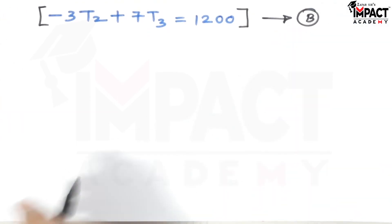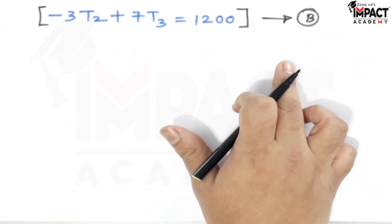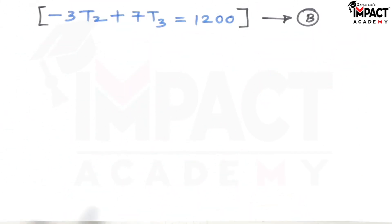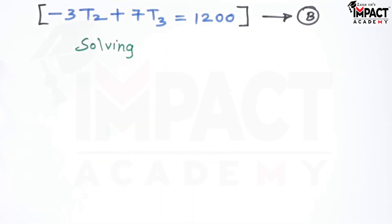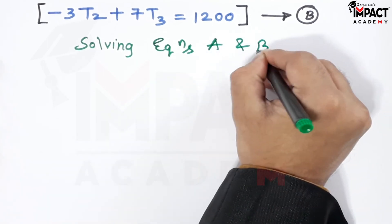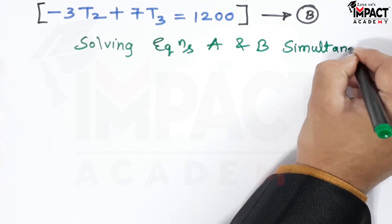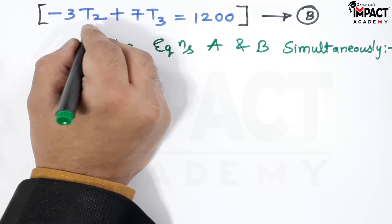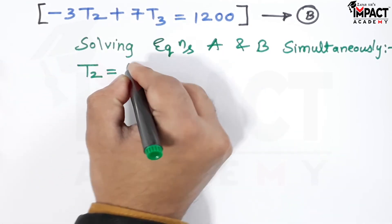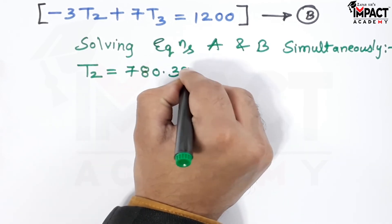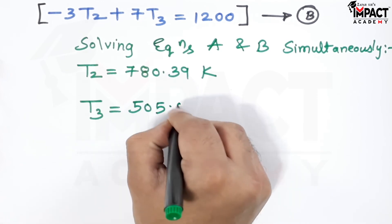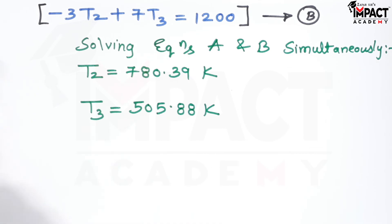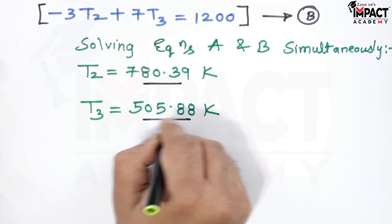Now solving equations A and B simultaneously — two equations with two unknowns T2 and T3. Solving them gives T2 = 780.39 Kelvin and T3 = 505.88 Kelvin.